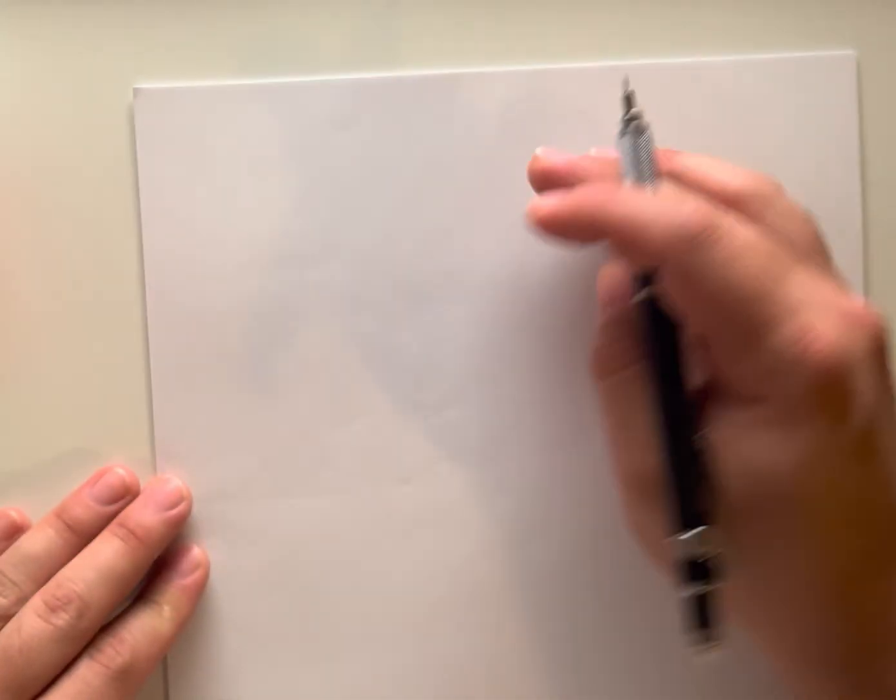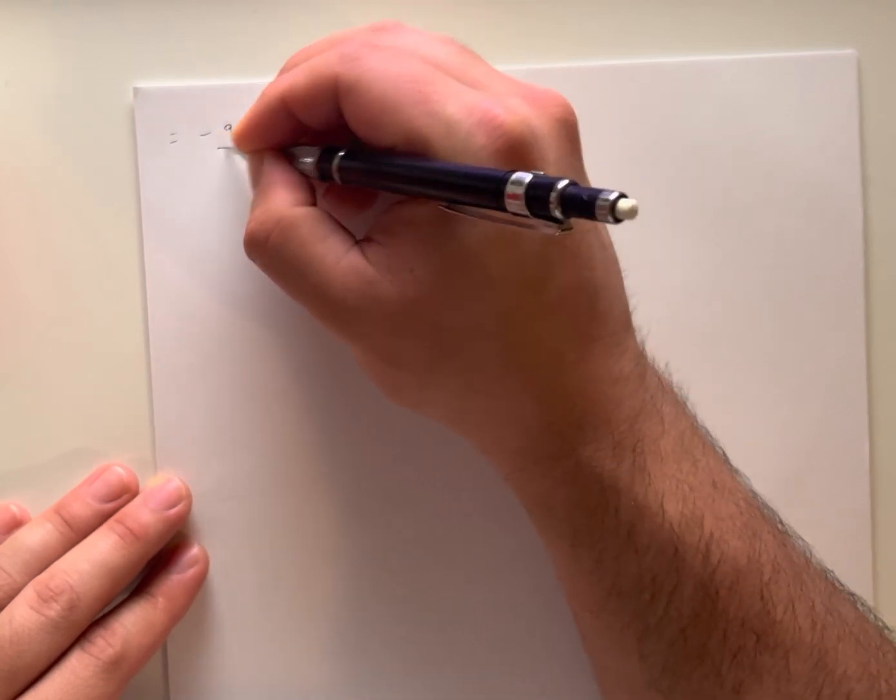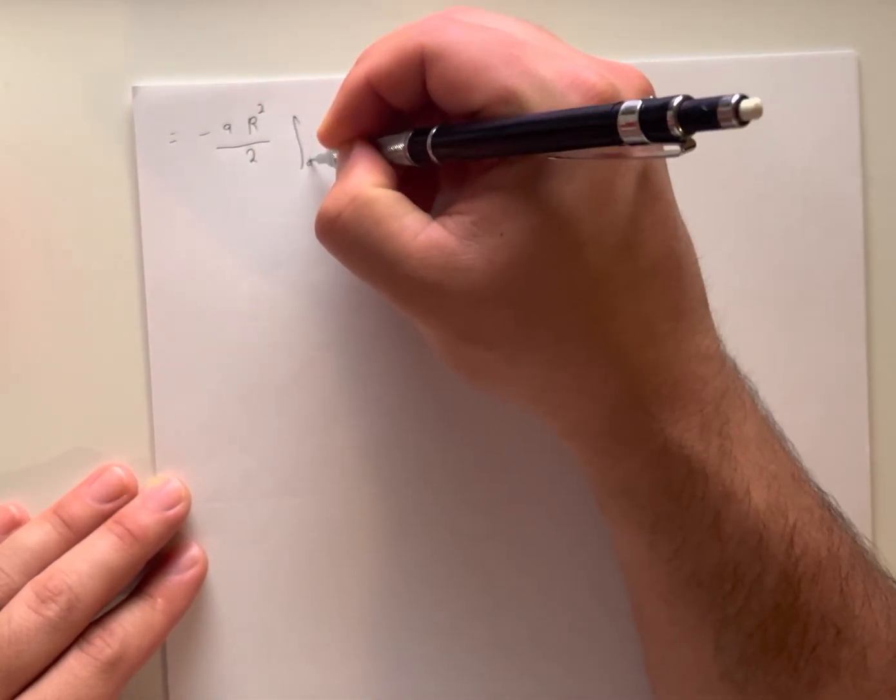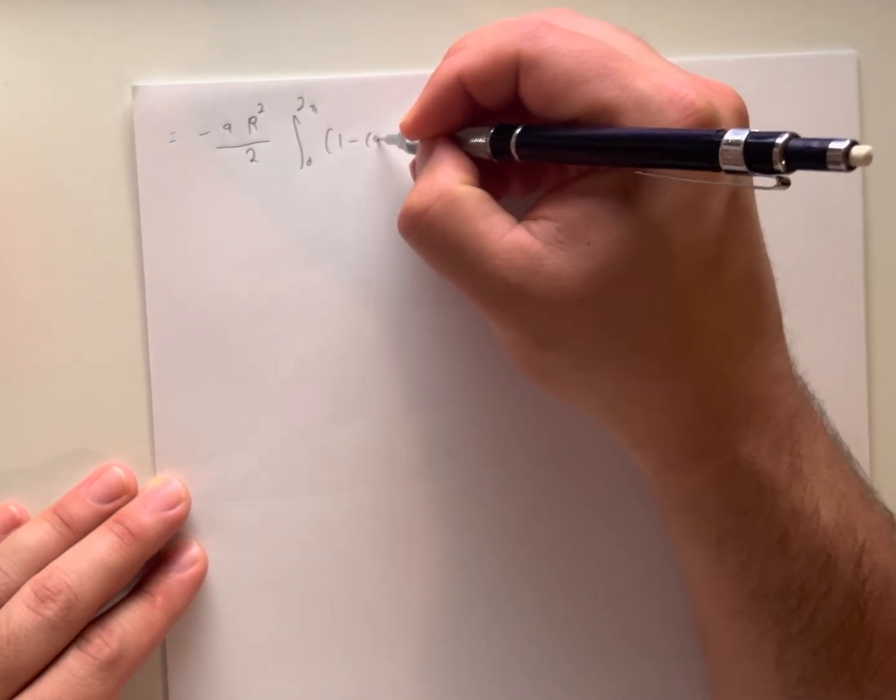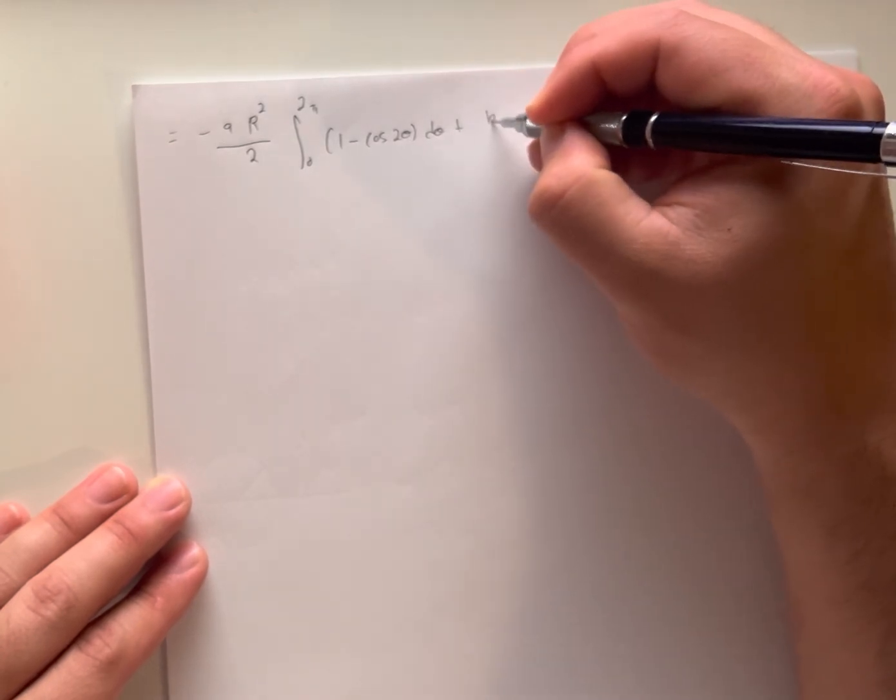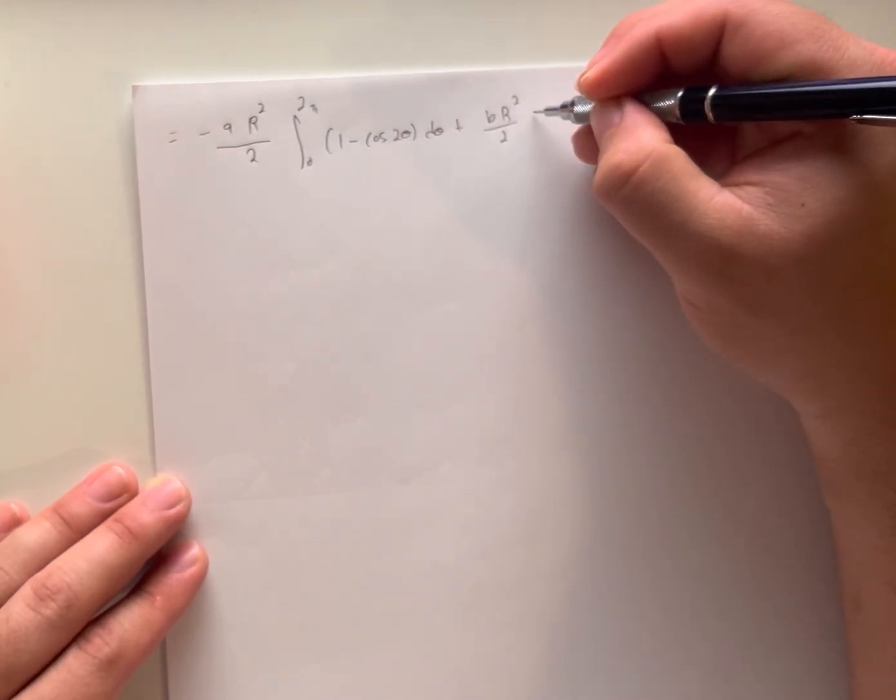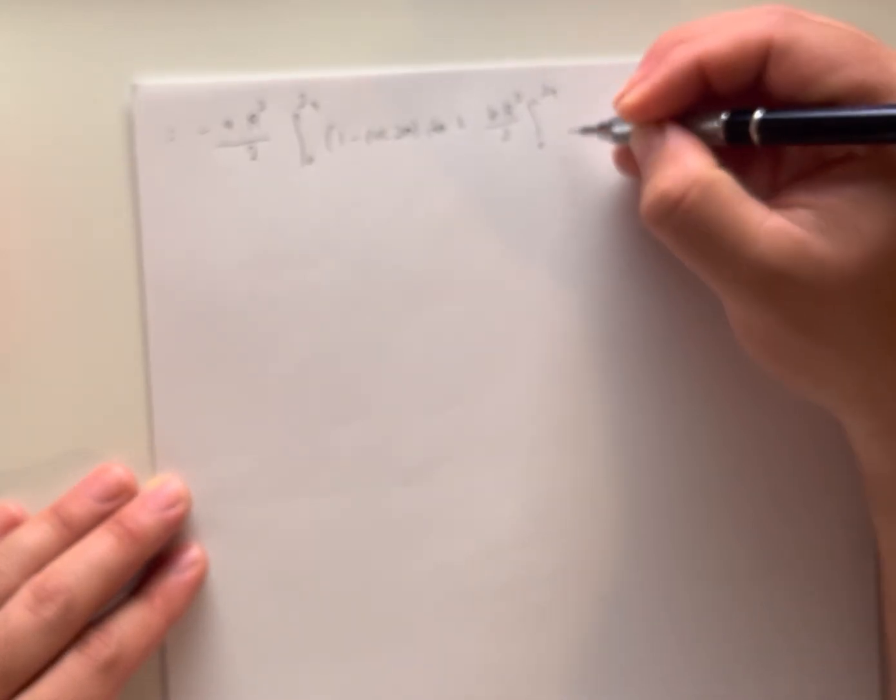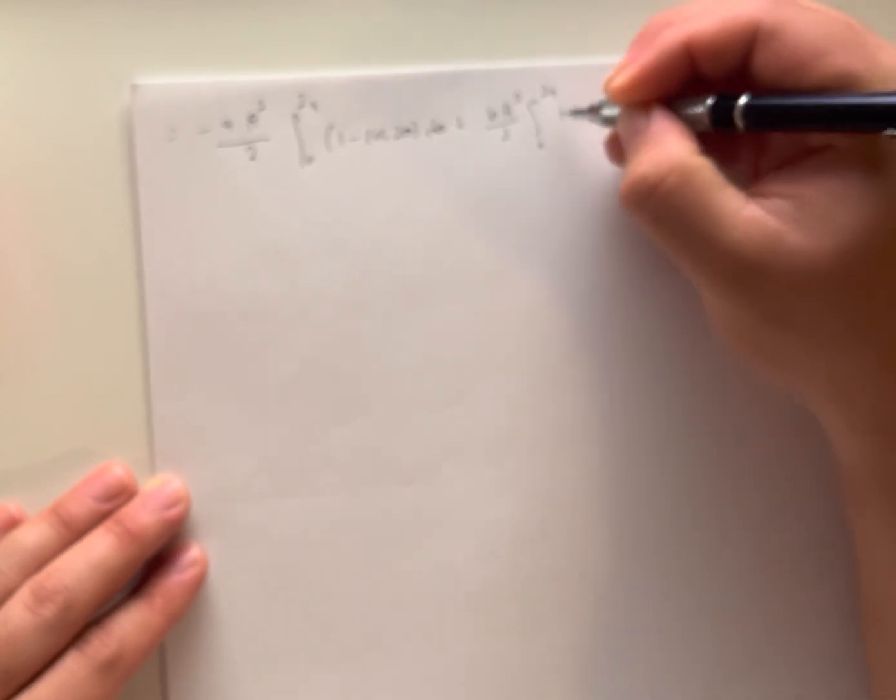Now that I know that, I can substitute that all back in and take my constants out to the front to get the equation simplified down to: (a*R^2/2) integral from 0 to 2*pi of (1 - cos(2*theta))*d-theta plus (b*R^2/2) integral from 0 to 2*pi of (1 + cos(2*theta))*d-theta.